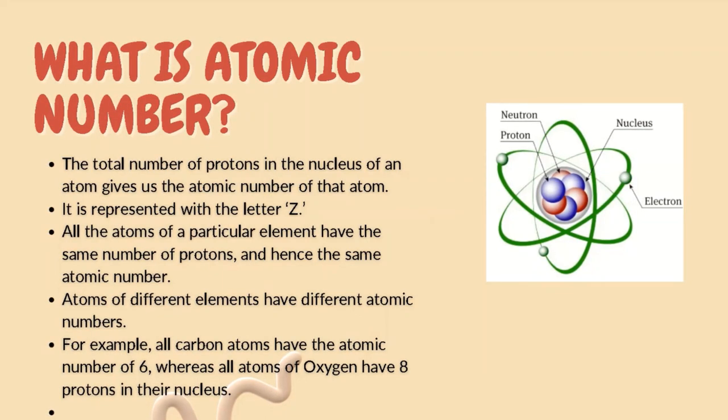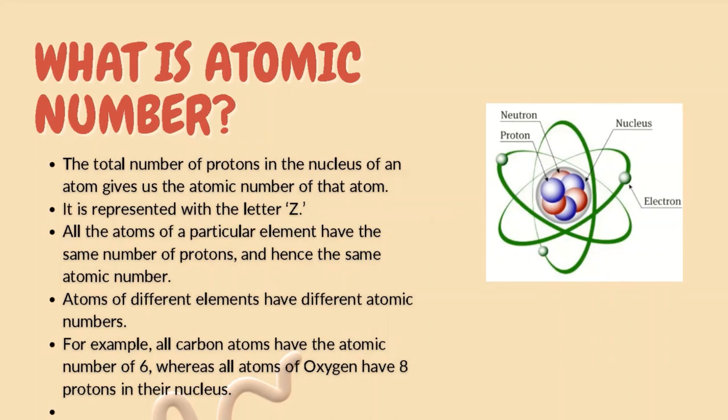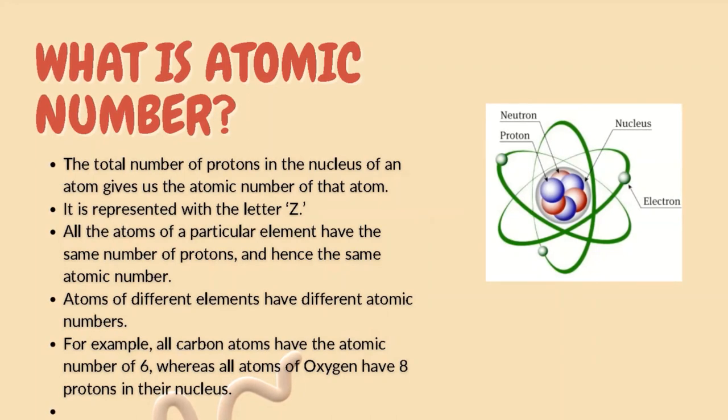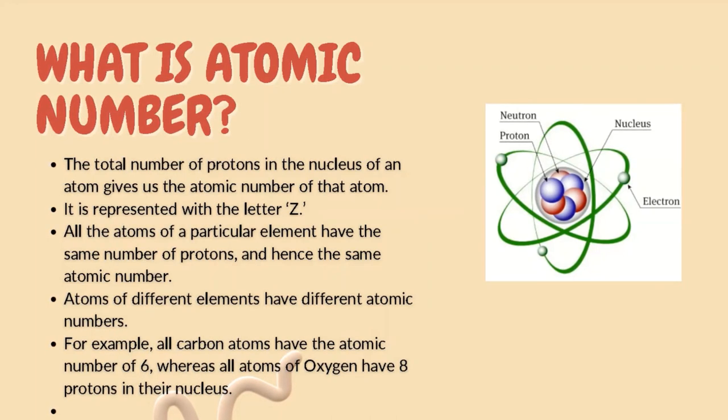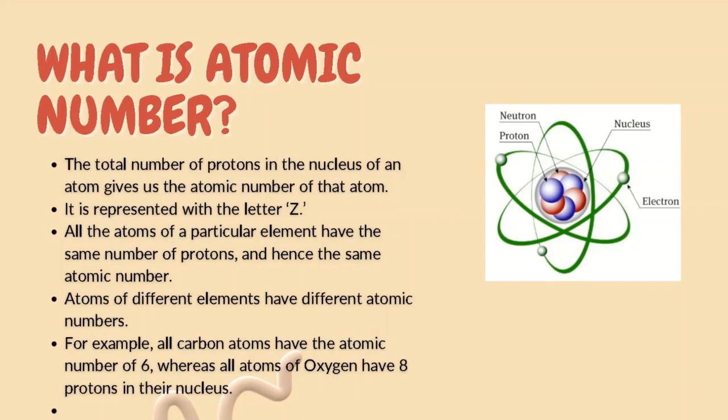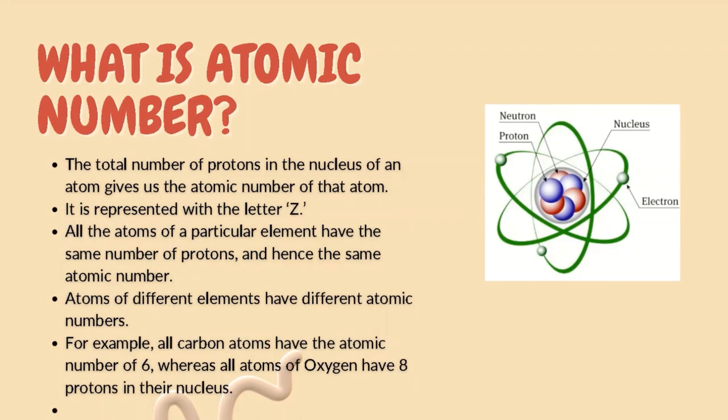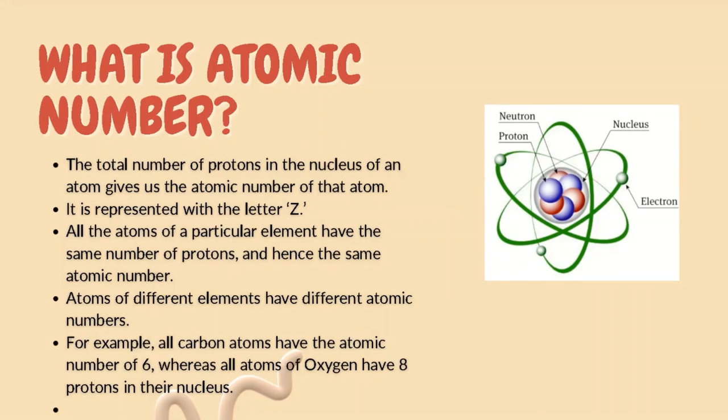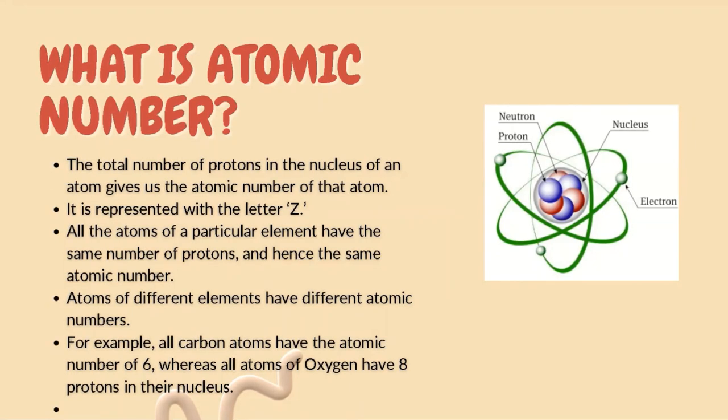Atoms of different elements have different atomic numbers. For example, all carbon atoms have the atomic number of six. Whereas all atoms of oxygen have eight protons in their nucleus, therefore their atomic number is eight.